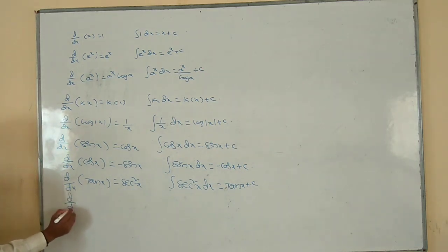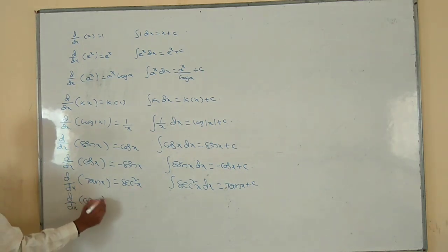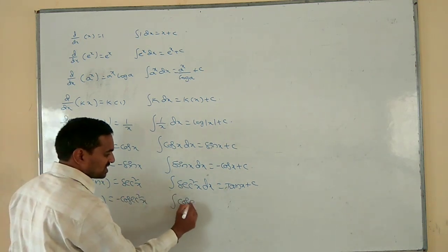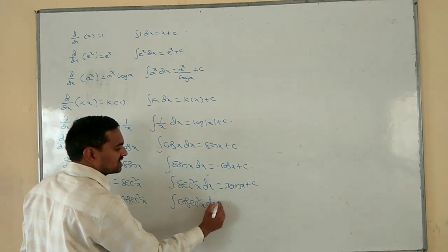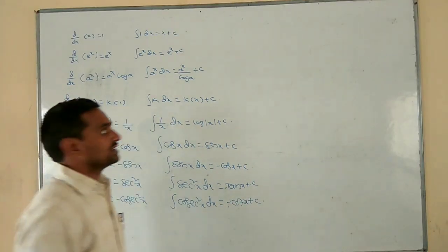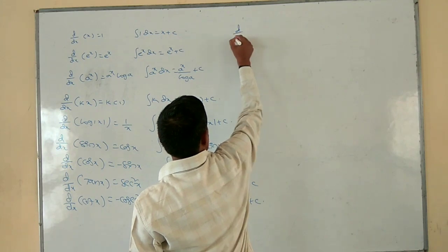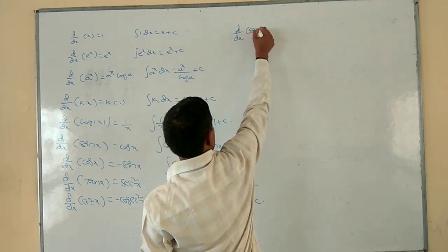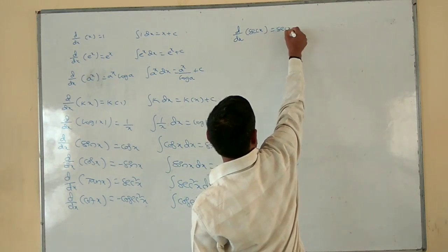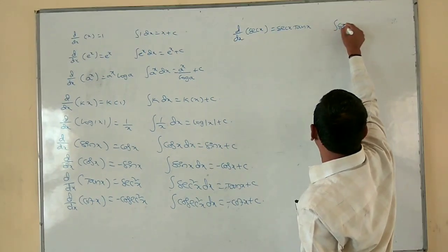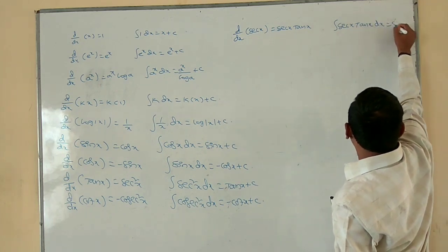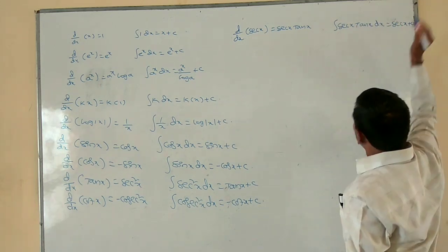dy/dx of cot x is minus cosec square x. Integration of cosec square x dx is minus cot x plus c. dy/dx of secant x is equal to secant x into tan x. Integration of secant x into tan x dx is equal to secant x plus c.